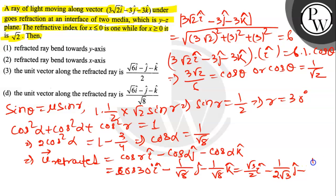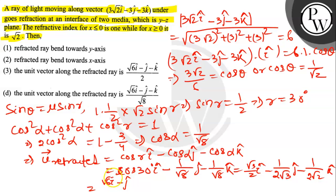So the refracted unit vector is √6 î - ĵ - k̂ divided by √8. Therefore the unit vector along the refracted ray is (√6 î - ĵ - k̂) / √8. Option D is the right answer. Thank you.